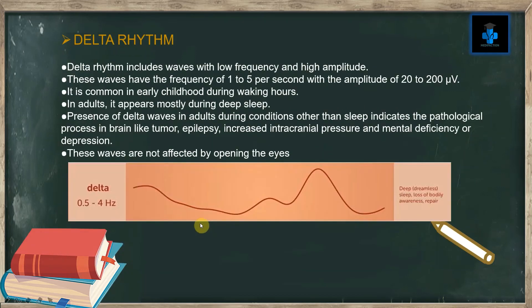Delta rhythm includes waves with low frequency and high amplitude. These waves have a frequency of 1 to 5 per second with an amplitude of 20 to 200 microvolts. Delta rhythm is common in early childhood, and during waking hours in adults it appears mostly during deep sleep. Presence of delta waves in adults during conditions other than sleep indicates a pathological process in the brain, such as tumor, epilepsy, increased intracranial pressure, mental deficiency, or even depression. These waves are not affected by opening the eyes.